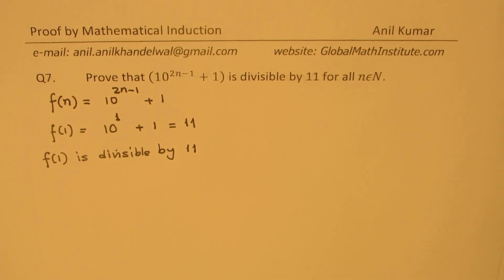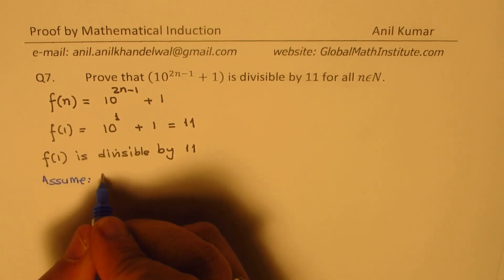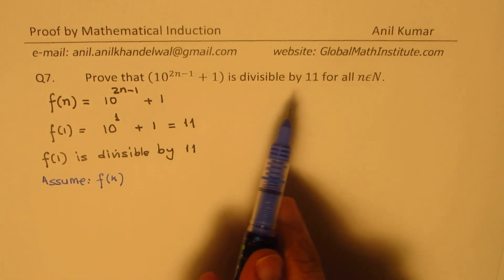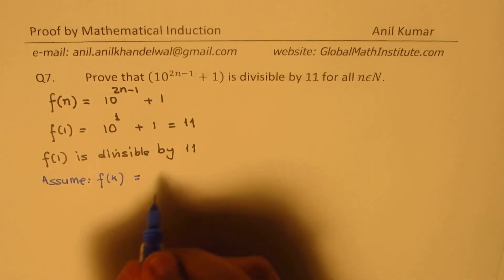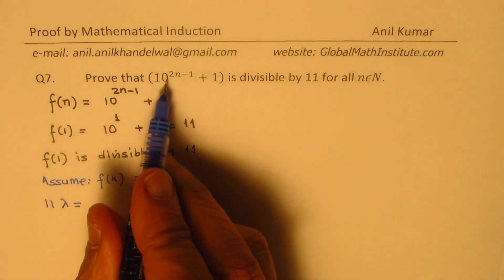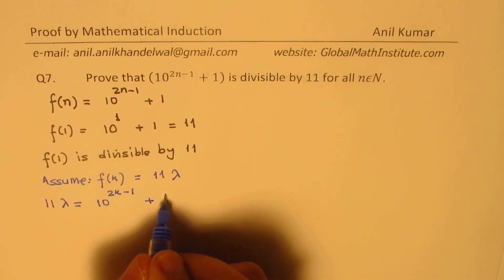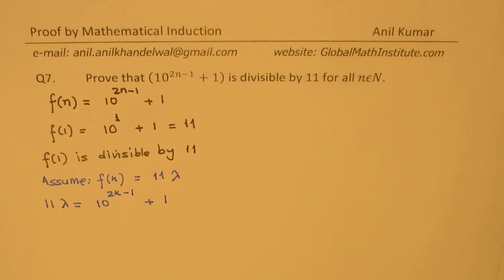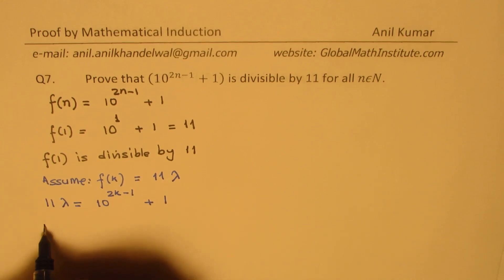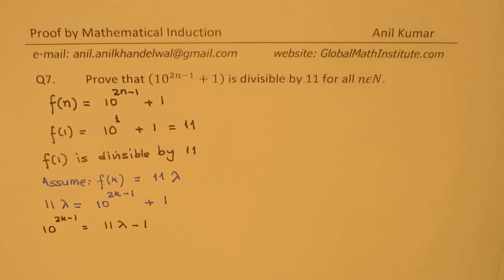Now, what we need to do is assume that f(k) is also divisible by 11. So f(k) equals 11 times lambda. We'll replace n with k, so we get 10 to the power of 2k minus 1 plus 1. We could rearrange and write 10 to the power of 2k minus 1 as equal to 11 lambda minus 1. You could use either one of these equations.